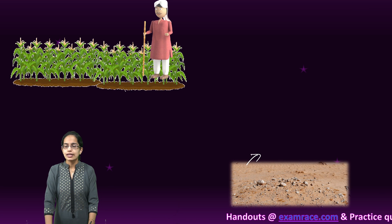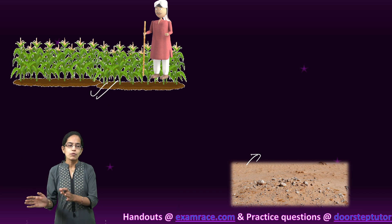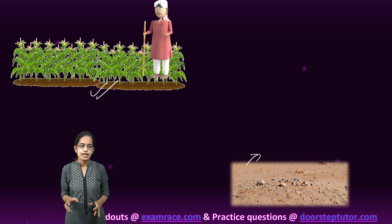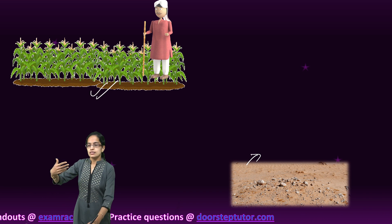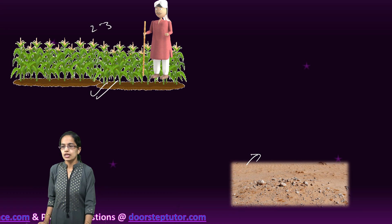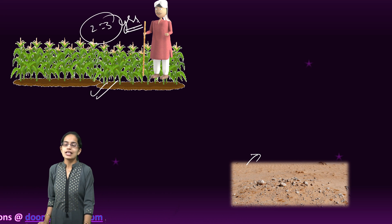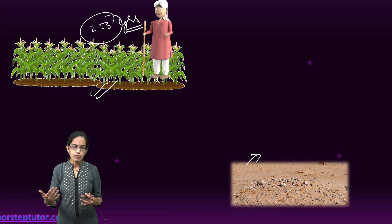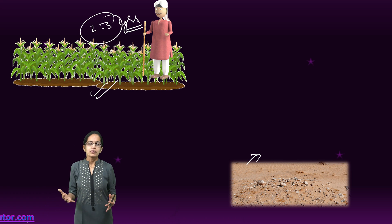The common crops grown under shifting cultivation are rice, maize, banana, and tapioca. Once this piece of land is fully consumed, it goes barren again — it is burned and left barren. The previous land parcel, which was left for two to three years, would now become fertile and be used again.